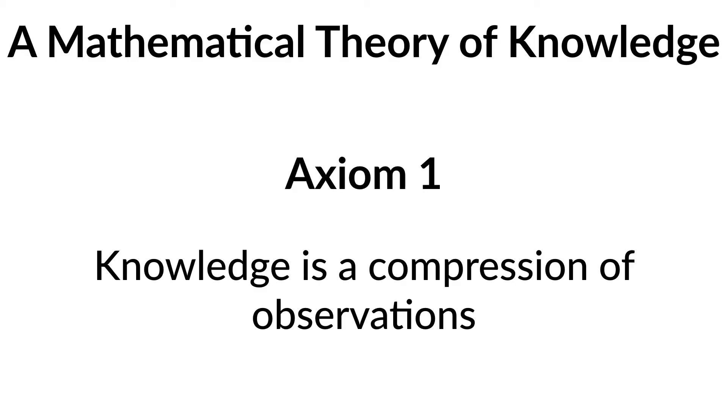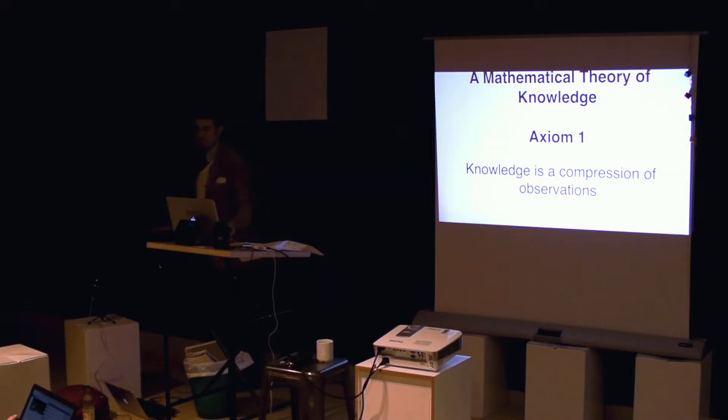So, axiom one, knowledge is a compression of observations. Mathematically, I'm trying to translate this stuff here, but I would say to translate this into English, knowledge is a compression of observations. More or less.